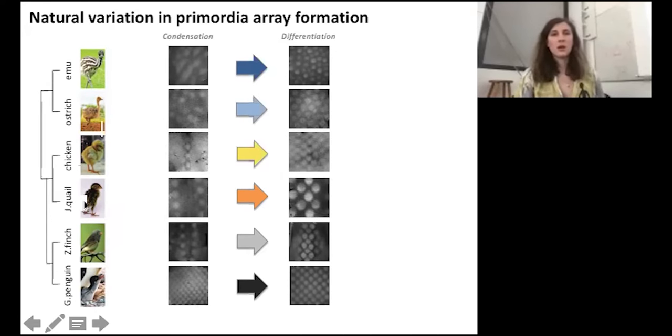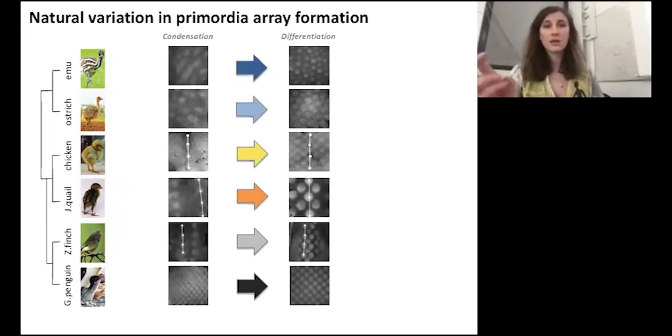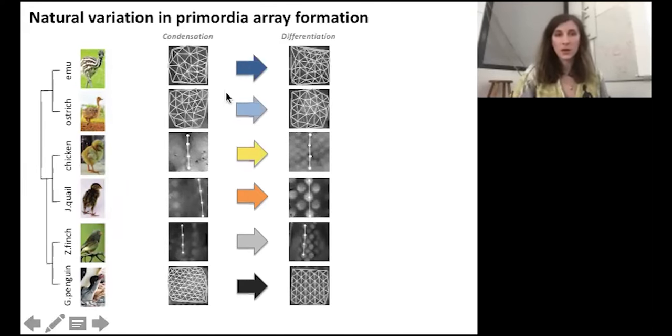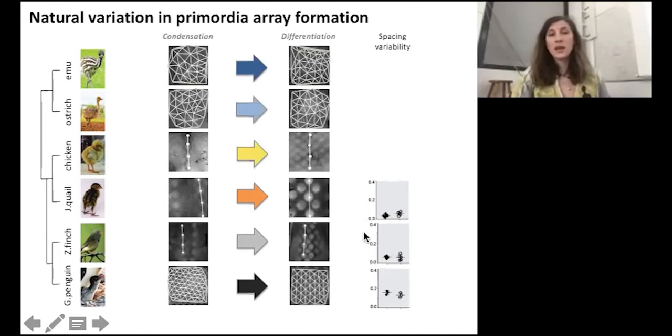We therefore recorded spacing variability to quantify pattern fidelity by measuring the distance between two primordia centers along a line of formation in chicken, quail, and finch, and across portions of competent skin in emu, ostrich, and penguin. And we found that the spacing variability is low and remains low in quail, finch, and penguin, meaning that the spacing fidelity is high. In chicken it appears high at the beginning and then becomes low.